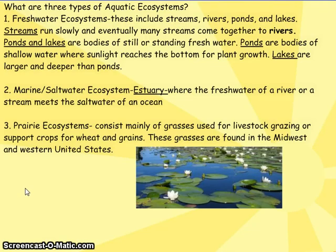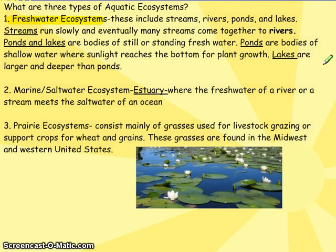Let's first look at ecosystems that deal with water. Fresh water ecosystems include streams, rivers, ponds, and lakes — make sure you write an example on your note-taking sheet. Let's also look at marine or saltwater ecosystems. This would include estuaries, where fresh water from rivers meets up with ocean salt water.